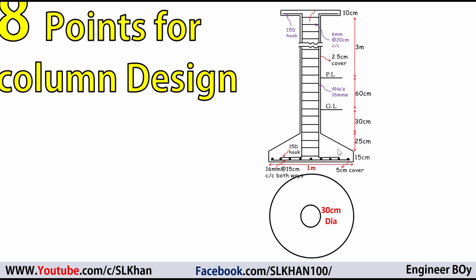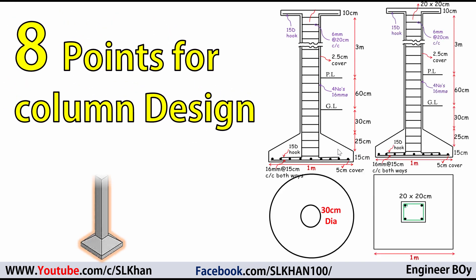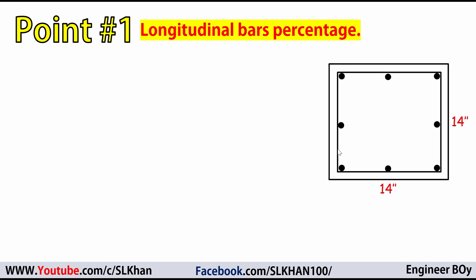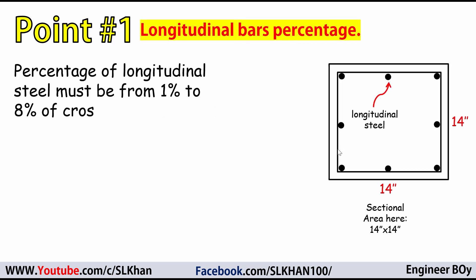Before designing a column, make sure you are familiar with these 8 points for column design. Point number 1 is about longitudinal bar percentage. According to ACI, the percentage of longitudinal steel bar must not be less than 1% nor more than 8% of the total gross cross-sectional area of the column.